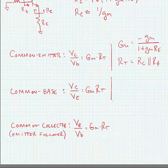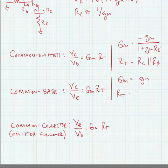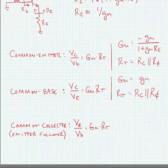The common base amplifier Gm is simply equal to little gm, and Rt is equal to the extrinsic collector resistance Rc in parallel with the intrinsic collector resistance.